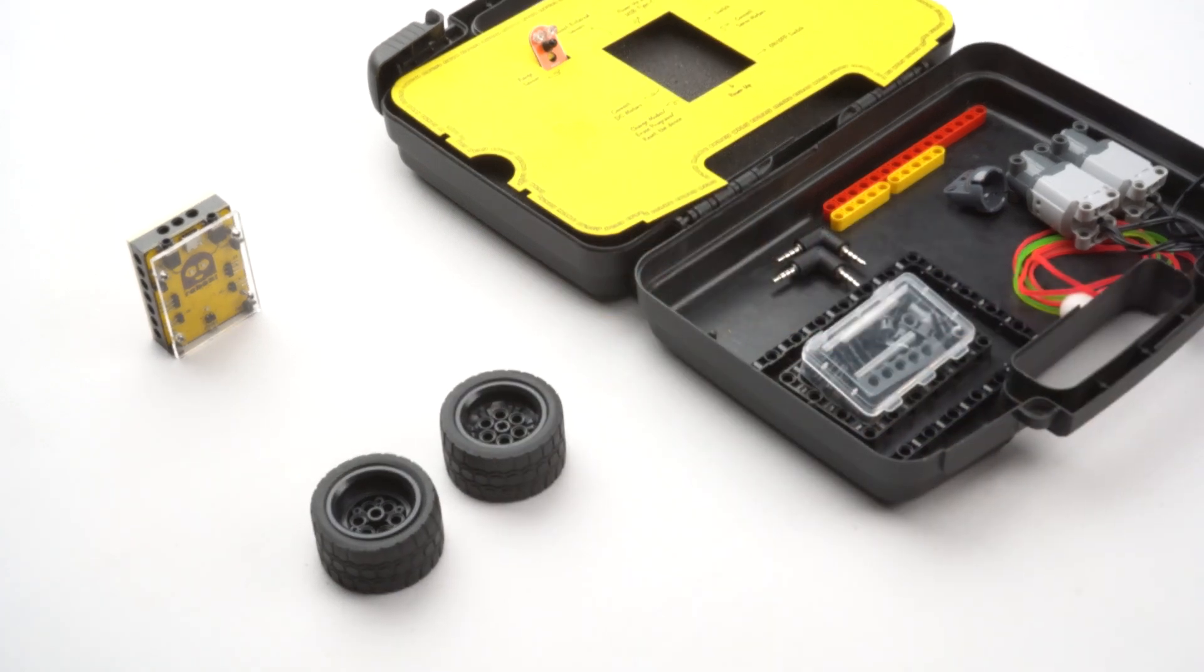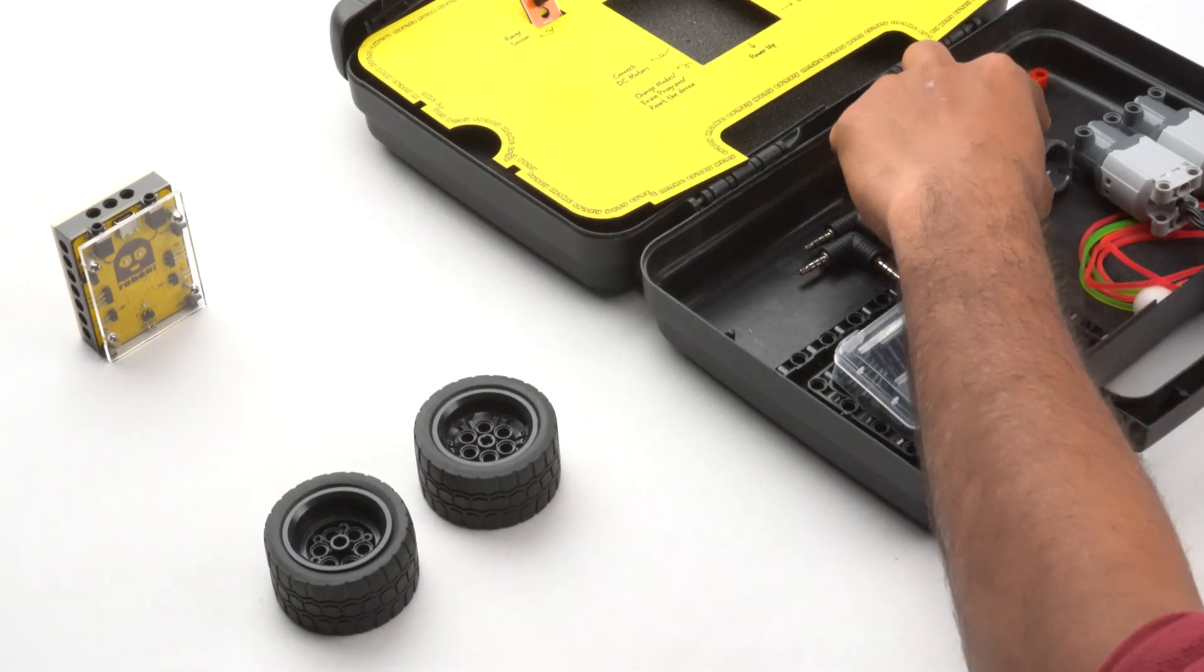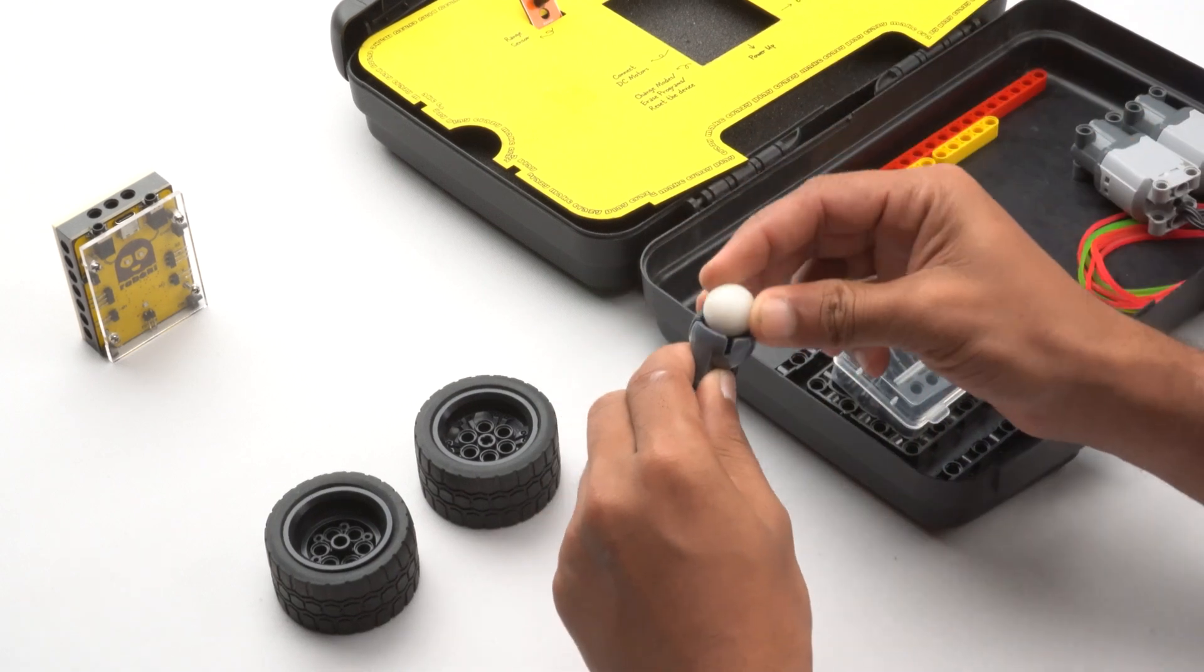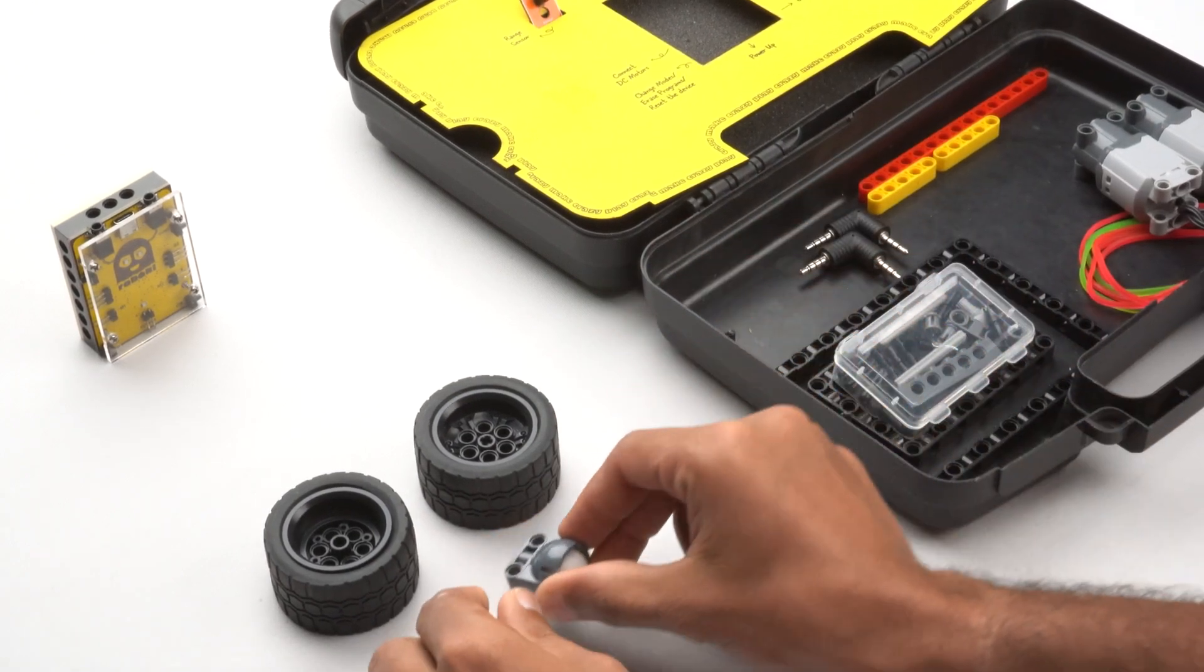Similarly, we have a caster socket and a palm pole to make another type of wheel which is a caster wheel.